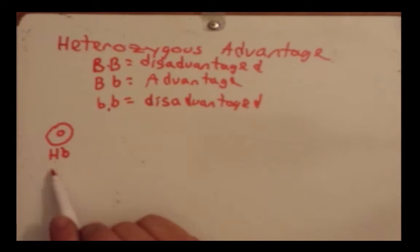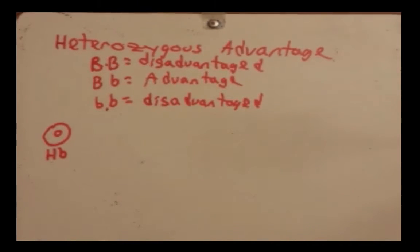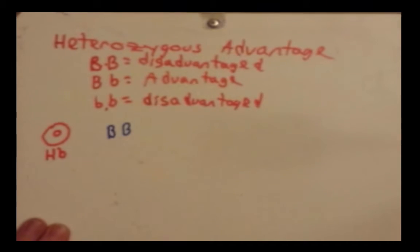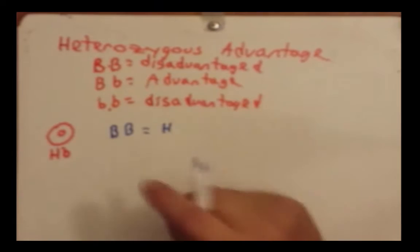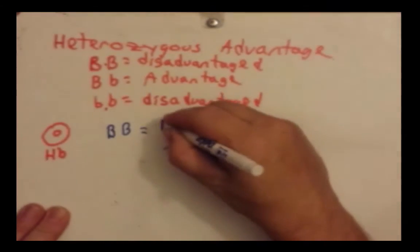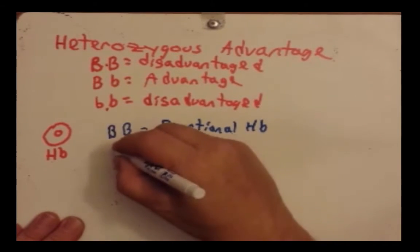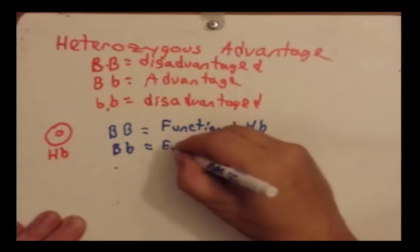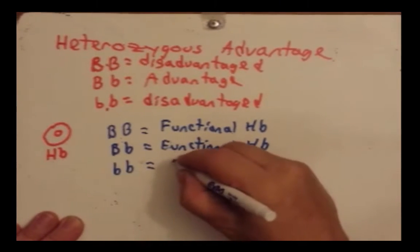One of the proteins that make up hemoglobin is the beta subunit — that's why I chose B. Individuals who are homozygous dominant (BB) for the beta subunit of hemoglobin have functional hemoglobin. Individuals who are heterozygous (Bb) also have functional hemoglobin. Homozygous recessives (bb) have sickle cell anemia.